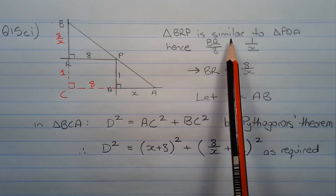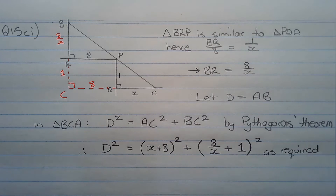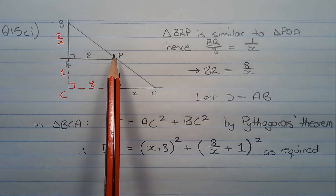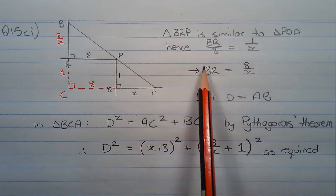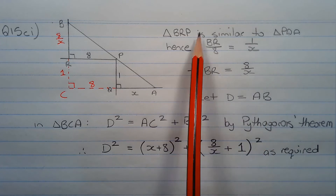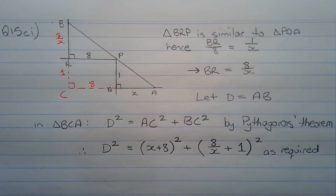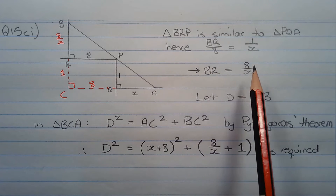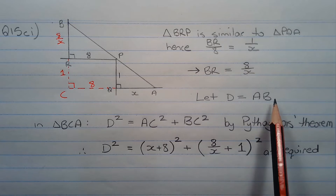Triangle BRP is similar to triangle PQA, hence corresponding sides are in the same ratio. So BR over 8 is equal to 1 over x. Solving for BR by multiplying both sides by 8, we get BR is equal to 8 over x. Now let d equal AB.